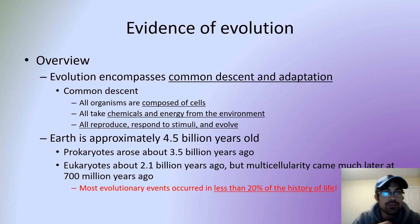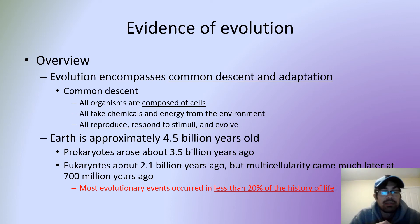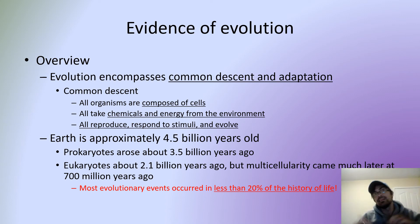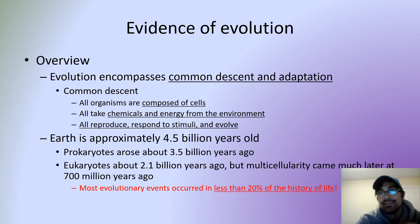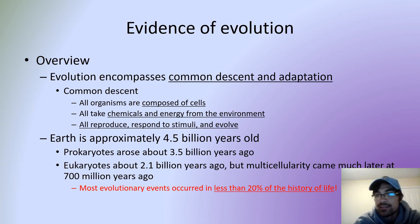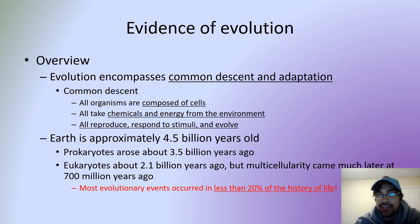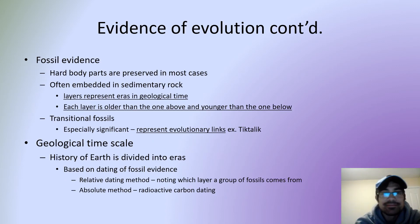That means a lot of the evolution we've seen has happened in the last 20% of this planet's life. Life is a complicated thing — all these organisms are just trying to survive and figuring out what works and what doesn't takes time. It may have started out slower but seems to have progressed at a much faster rate as life became more efficient.